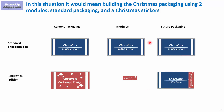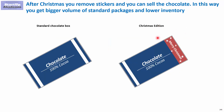The end goal is to create, using those two modules, two different packaging options: standard, and by adding the sticker, the Christmas edition. After Christmas, if you don't manage to sell all the Christmas edition chocolates, you simply remove the sticker and you end up with a standard chocolate that you can sell at full price.